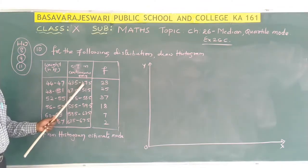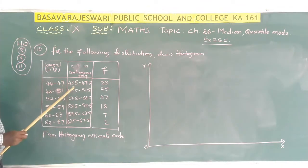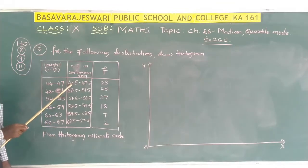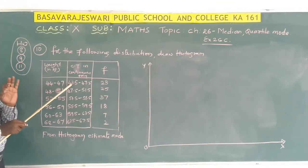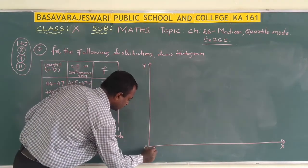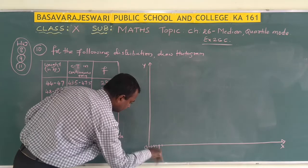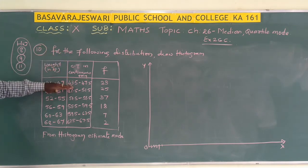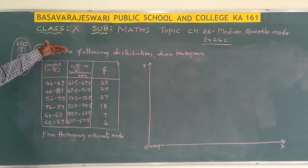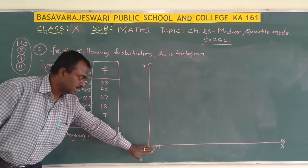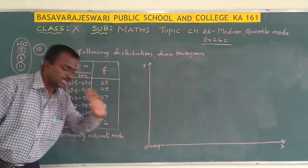We only have to take the upper limits. But observe here — it is starting from 43.5, not from the origin. Therefore, first we have to take a 2 centimeter square as a kink. The kink symbolizes that there are still more points previously — that is, before 43.5 some more weights are there that we are not representing. So for that we are using the kink.